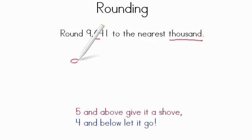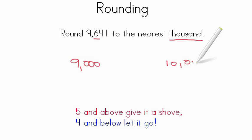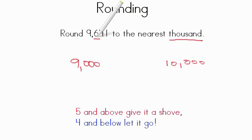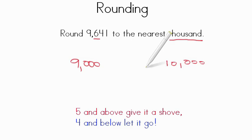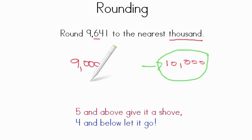The lower benchmark is 9,000 and the upper one is 10,000. So if we look at this 6, think about our midpoint — is 6 above the midpoint or below it? Well, 5 and above, give it a shove. So 6 is above it, so we're going to go up to 10,000. The nearest thousand would be 10,000.